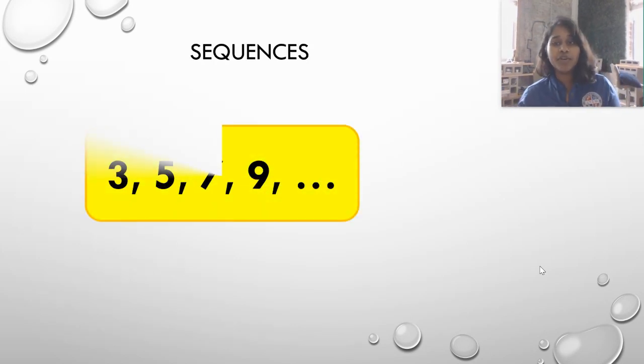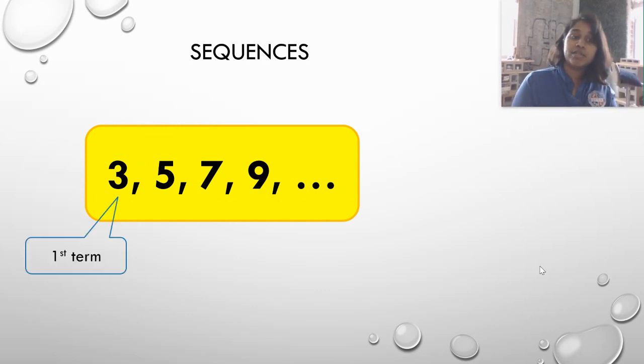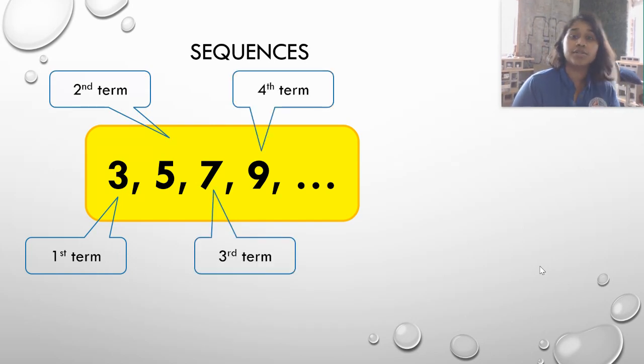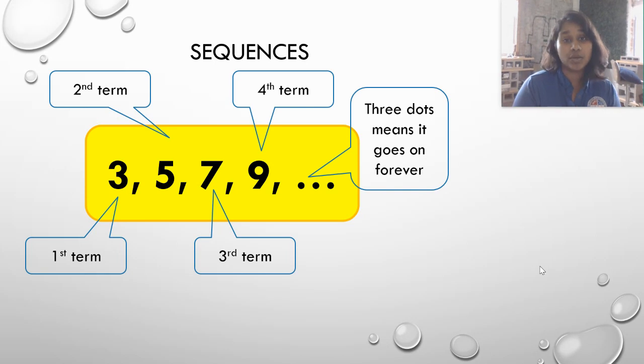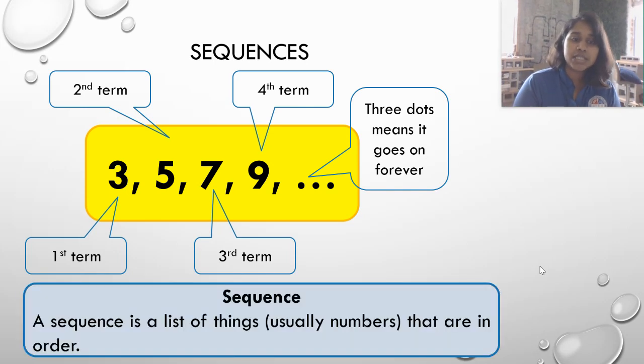So let's dive on in. Sequences. You've already seen them. You really kind of know what they look like. But just to break it down one more time, that first one is going to be the first term represented as a sub one more often than not. Not always. And we'll get into some of those crazier cases as the videos go on. Second term, third term, fourth term. Again, that could be a sub four. The dot dot dot means it goes on forever. So this is a sequence. It's a list of things that are in an order.